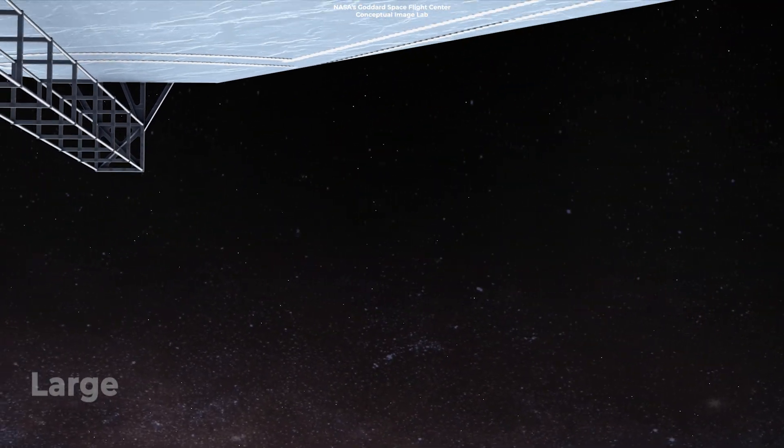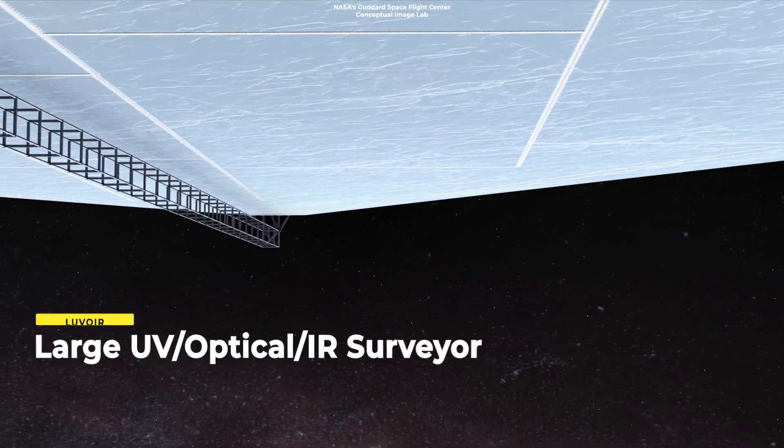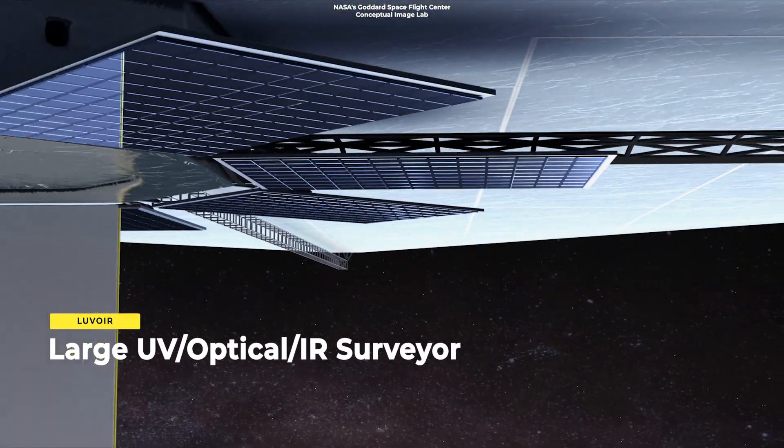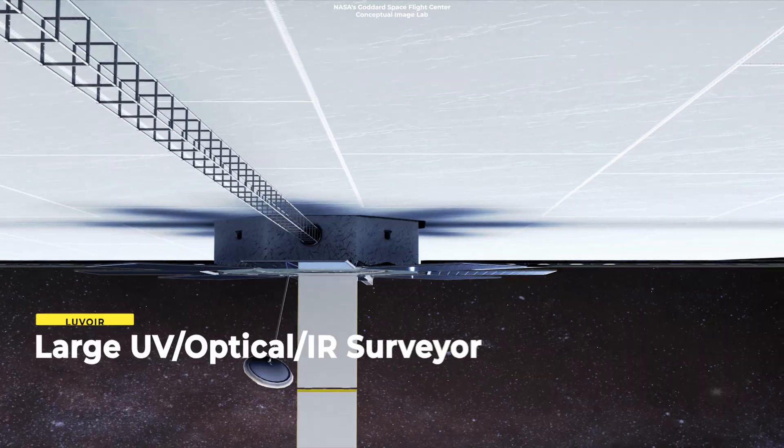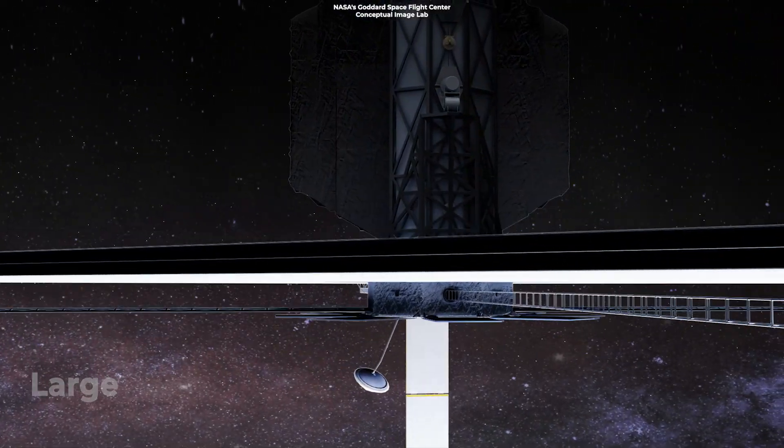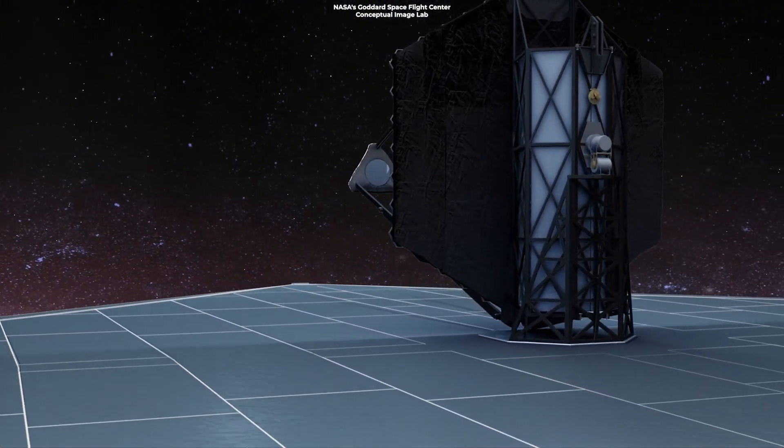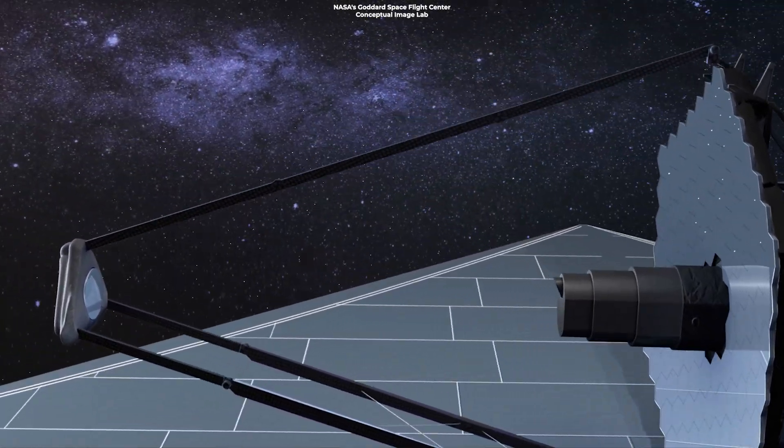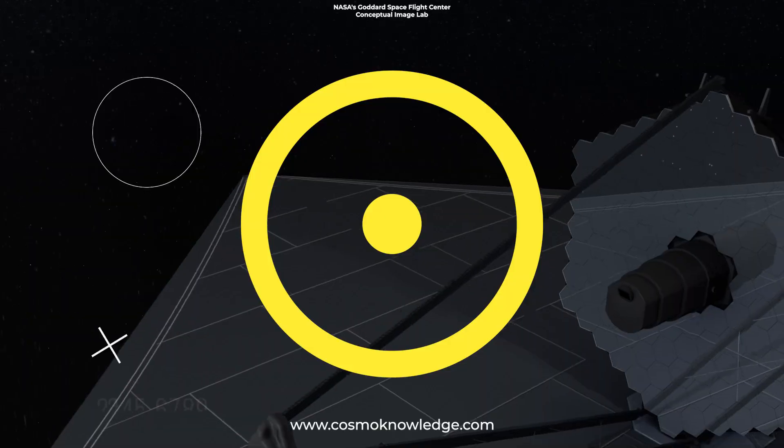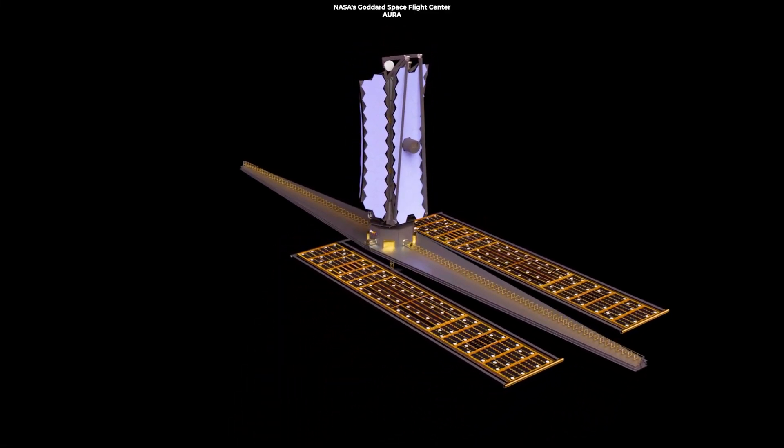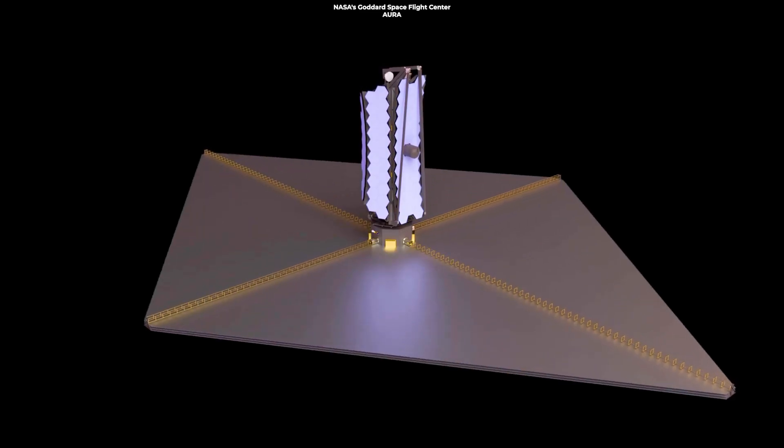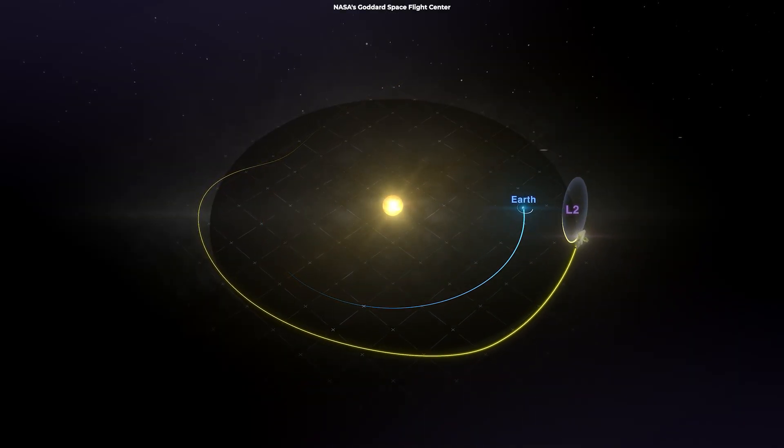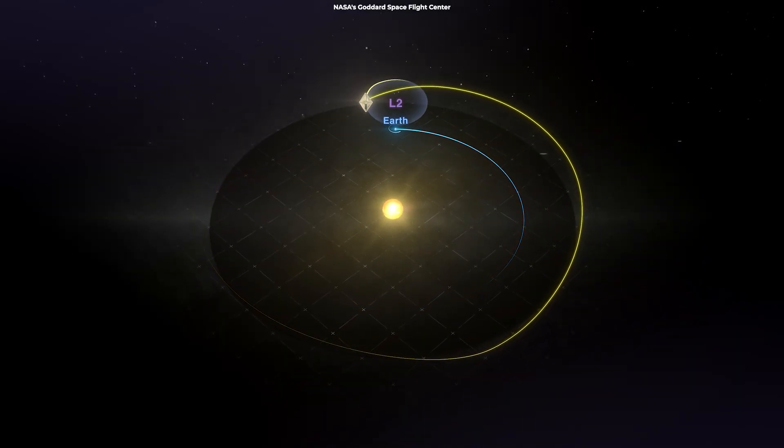One such mission concept is called the Large UV Optical IR Surveyor, a concept for a highly capable multi-wavelength space observatory with ambitious science objectives. The team behind LeVoir has proposed a launch date in the mid-2030s. The Space Telescope includes upgradeable modern instruments and would reside at Earth-Sun's second Lagrange point, or L2 point.